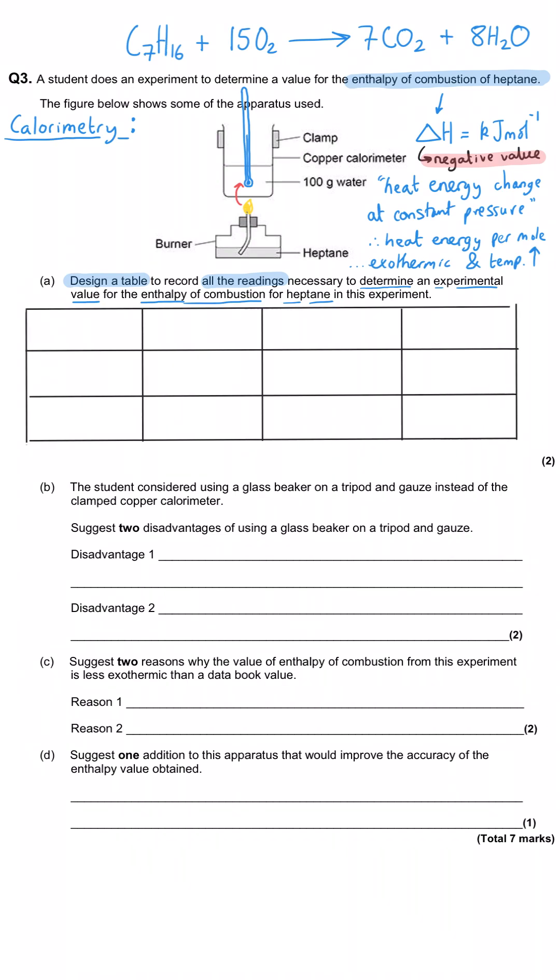First of all we're going to need to measure the temperature in degrees C of this water inside the copper can and then we're going to need to measure the final temperature in degrees C. And so that's going to be the first mark for this question showing that we need to measure the temperature twice. And from there we would need to derive the temperature change but that is not essential for the marks for this particular question.